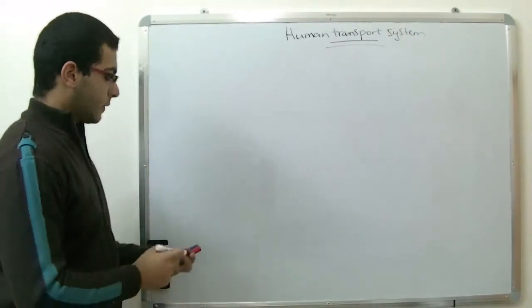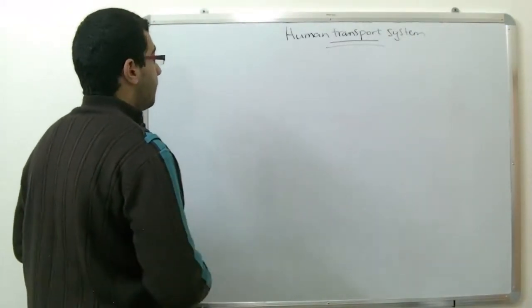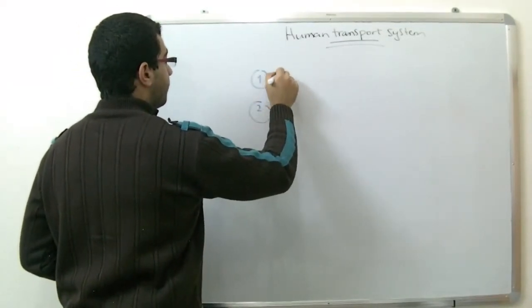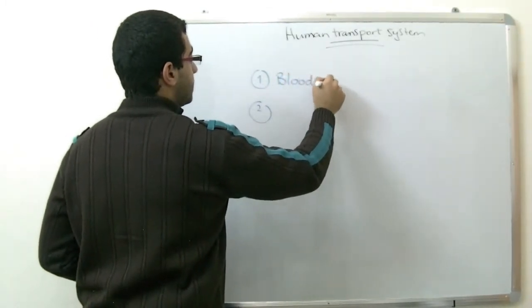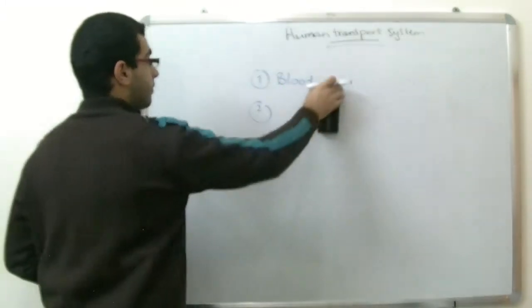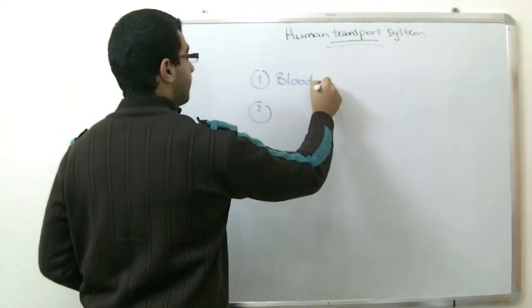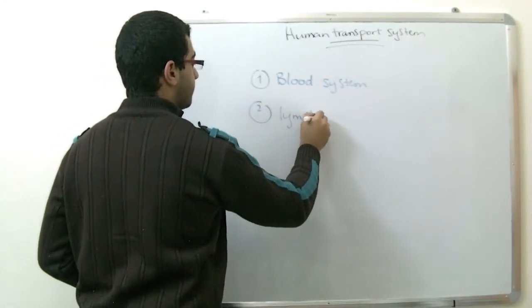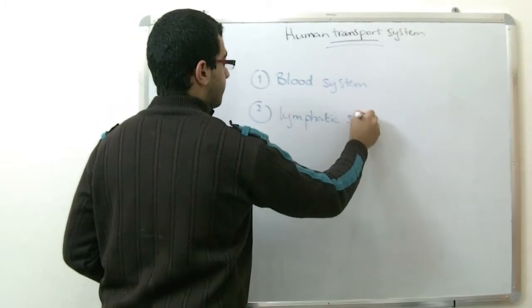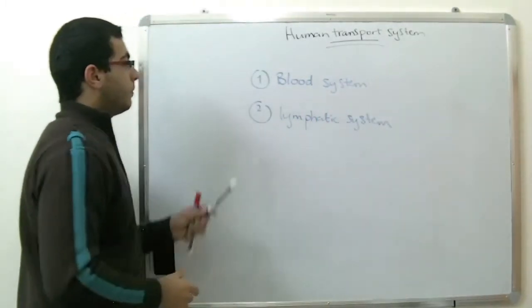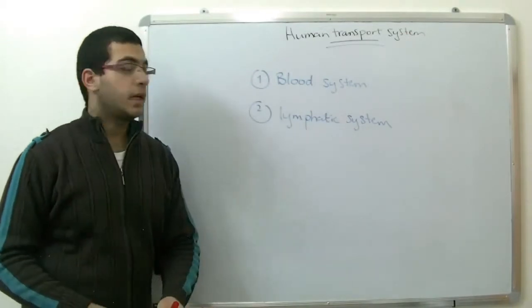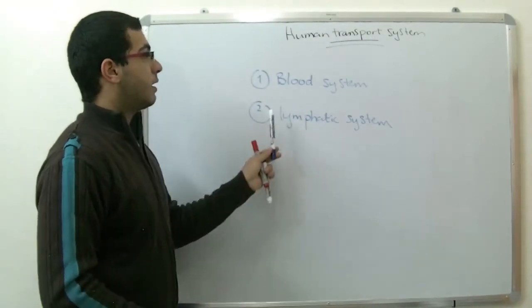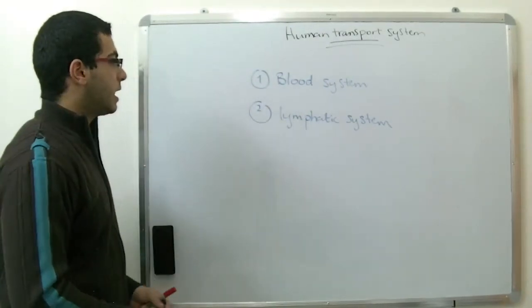The human transport system consists of two subsystems which are the blood system and the lymphatic system. Those two systems are greatly connected to each other and they together carry out the transport function inside the human body.